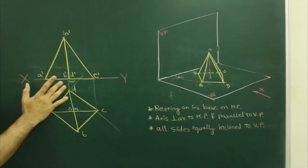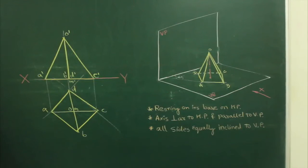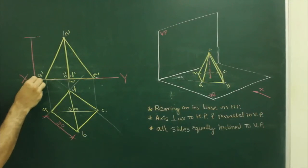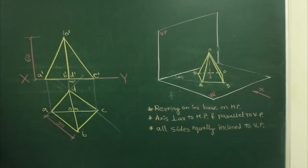So we have the front view of the square pyramid, size is 30 and height 60.